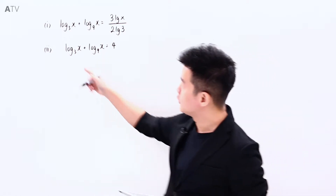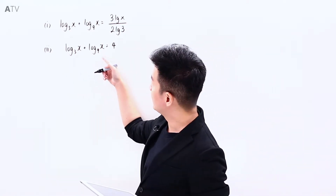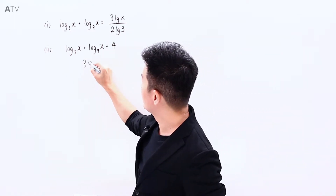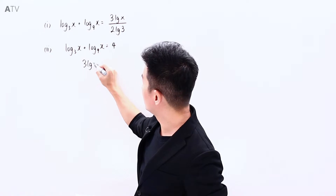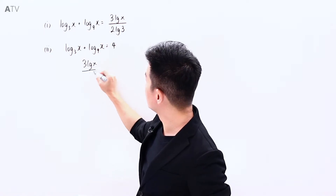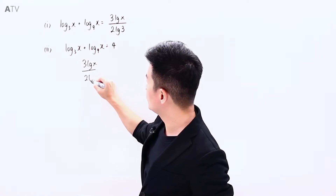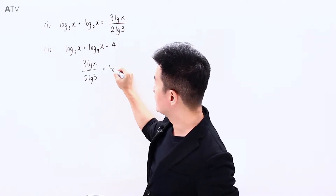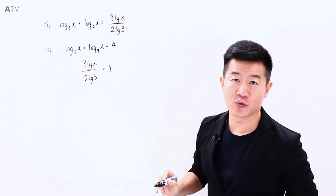By making use of part one, we are going to re-express the left-hand side to 3 log x divided by 2 log 3. This is equal to 4.